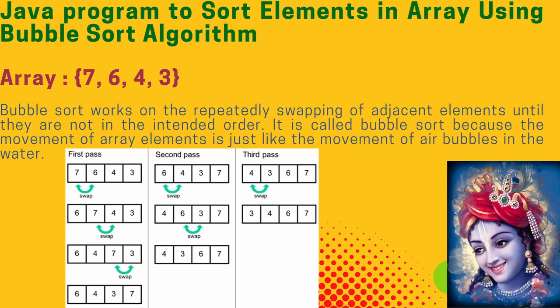It is called a bubble sort algorithm because the movement of elements is just like the movement of air bubbles in water.